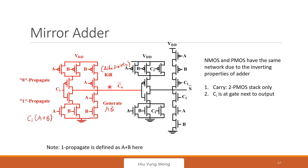And how does it kill it? If both are zero, no matter what is the input, this one is going to be high. Once this is high, the output is zero because this is bar, right? So carry out is zero. So this will kill no matter what is the input.